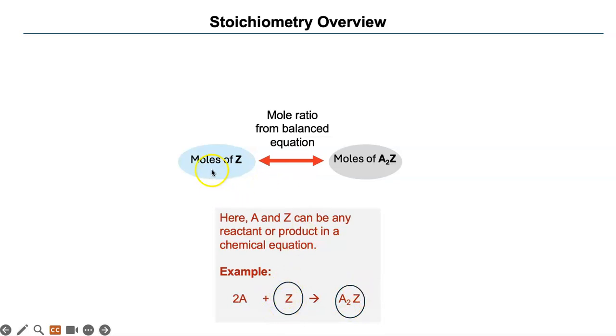So we can consider going between Z and moles of A₂Z. You can go from moles of Z to moles of A₂Z using the balanced reaction mole ratio. In this case,